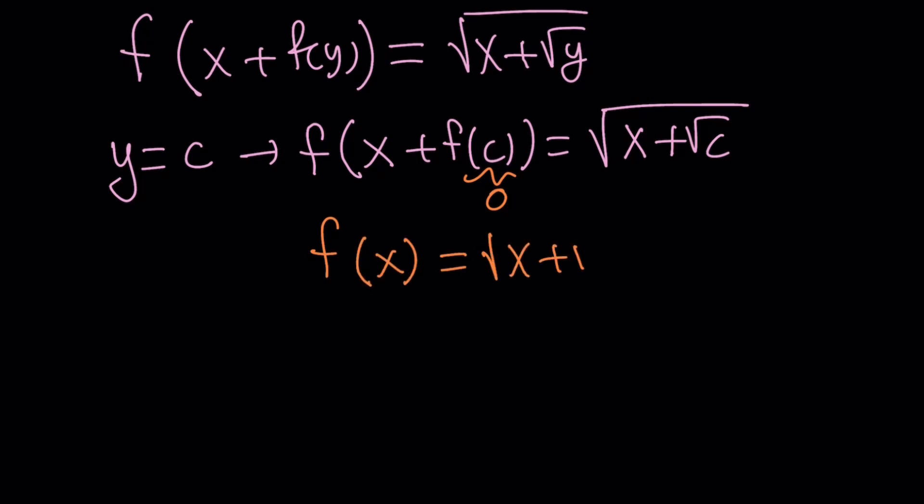Okay, great. So now we got the answer. Pretty much. Almost there. Except for the value of c because we don't still know what it is. But we're close. So we got f of x equals the square root of x plus the square root of c, which is a constant. How do you find the value of c?